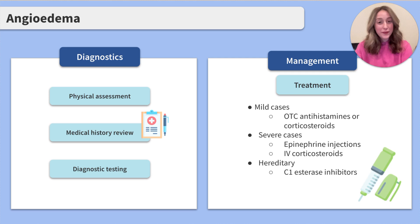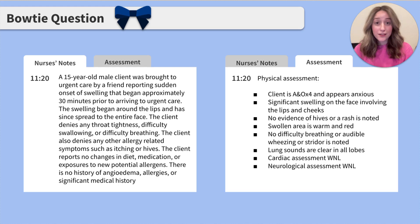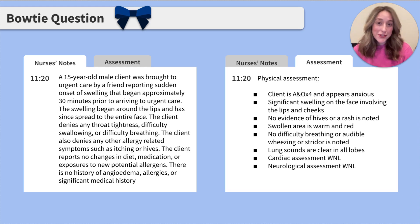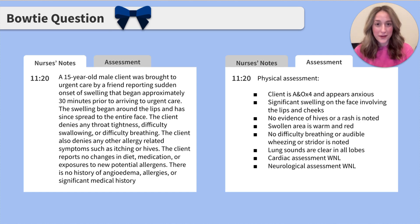Now that we've covered angioedema, let's work through a practice question. This practice question is a bowtie question, which is a next-generation style question you will see on your exam. Let's review the nurse's note, then we'll take a look at the assessment tab to see what's found there.